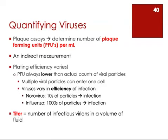The PFU number is always going to be lower than the actual count of viral particles on that plate, for a couple of reasons. First, multiple viral particles can go into one bacterial cell, so you can get a plaque where a cell was lysed not from one viral particle but from several that all went into the same cell. That's part of the reason we can't do a one-to-one comparison.